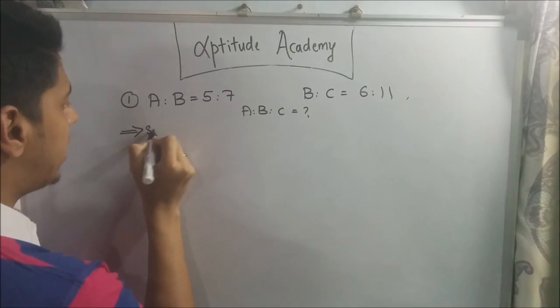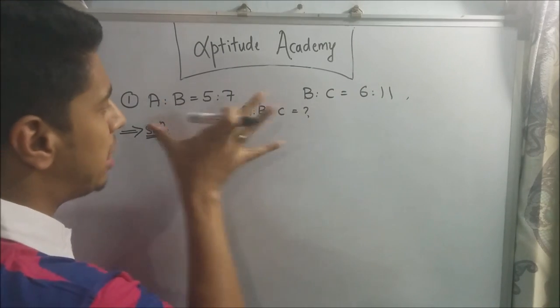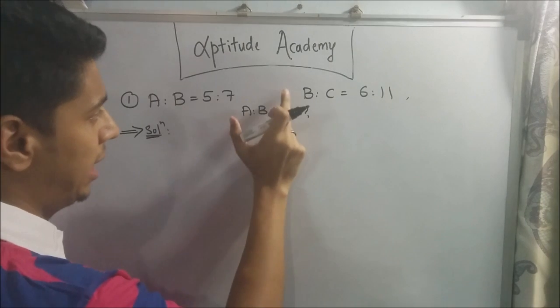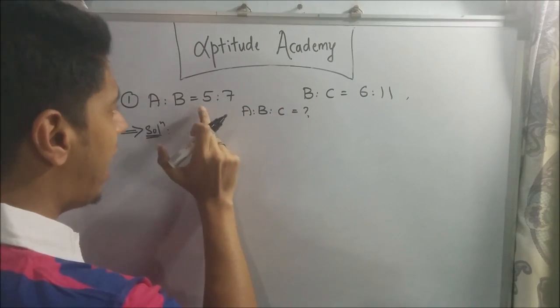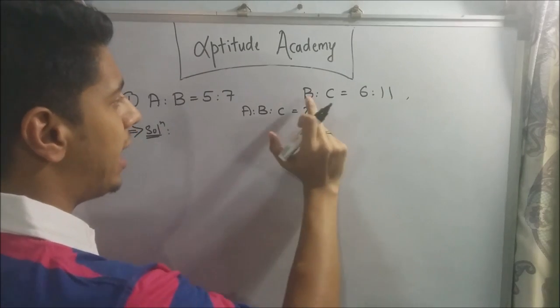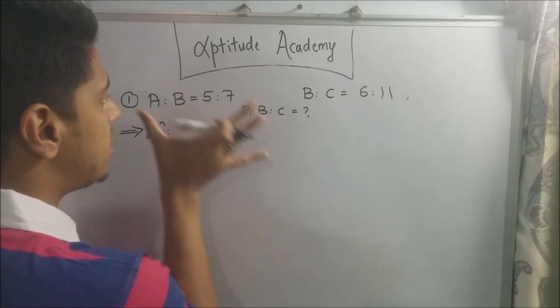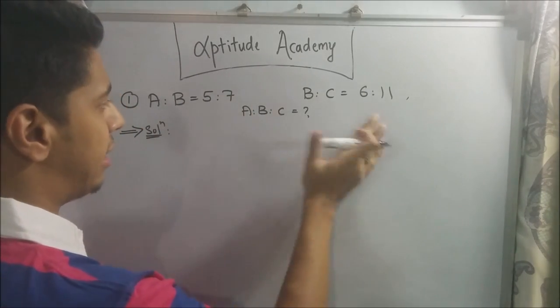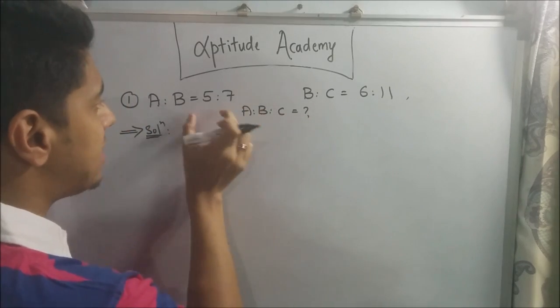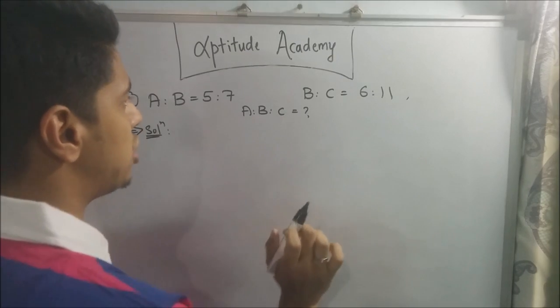Now, to write it down, there's a simple technique to do this. You know what is common in both these ratios? You've got letter b, right? So the quantity b is common in both the ratios. But here, they're saying if a is 5, then b is 7. And here, they're saying if b is 6, then c is 11. So what you're going to do is do some multiplication or division on either of these ratios or both these ratios and somehow get the b quantities equal to each other. Then you can join them and finish off the sum.